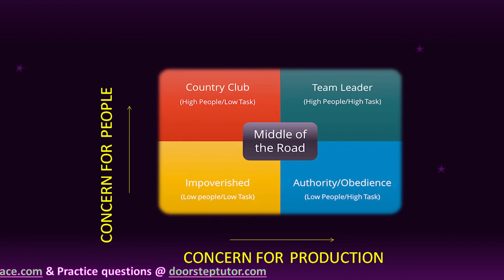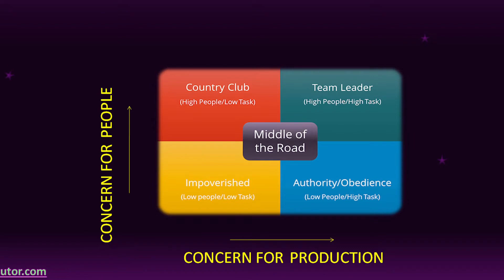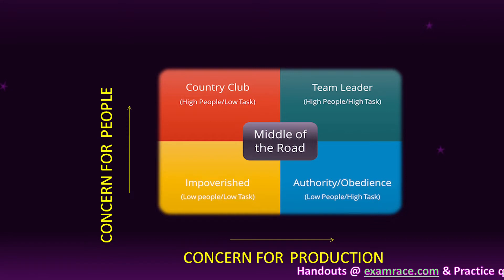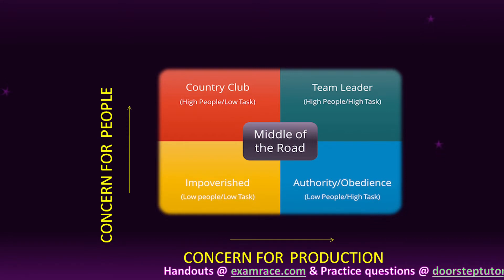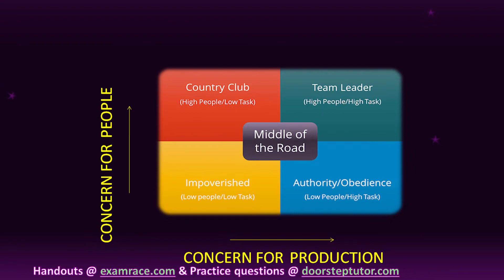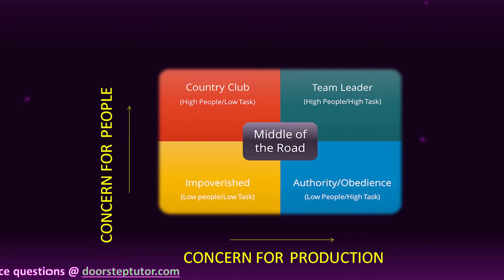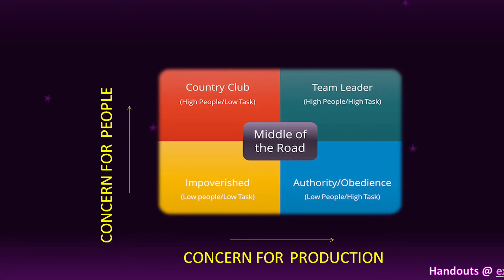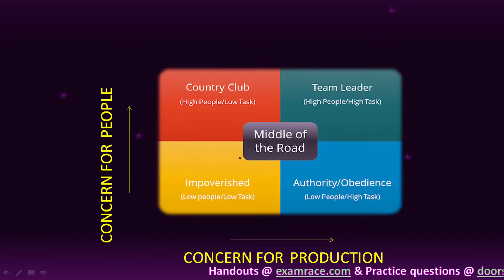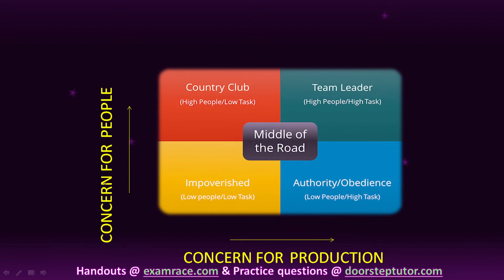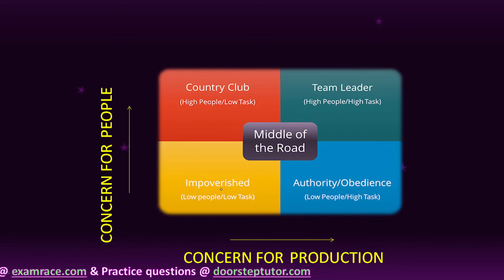So 1 to 9 on the x-axis and 1 to 9 on the y-axis gives us 81 grids. The main objective of this model is to determine the leadership style. These 81 grids represent different types of leadership styles.